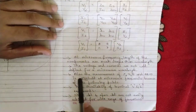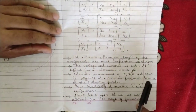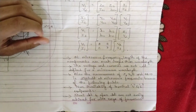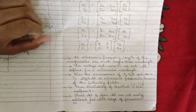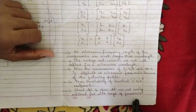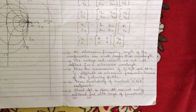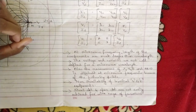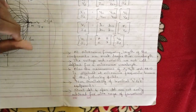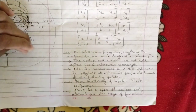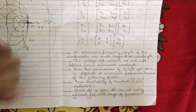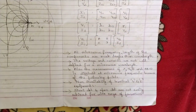The measurement of Z, Y, H, and ABCD parameters is difficult at microwave frequencies for the following reasons: non-availability of terminal voltage and current measurement equipment; short circuit and open circuit are not easily achieved for a wide range of frequencies. The IEEE microwave frequency bands discussed in Module 1 define certain ranges — only within those frequency ranges are short and open circuits applicable for microwave networks.